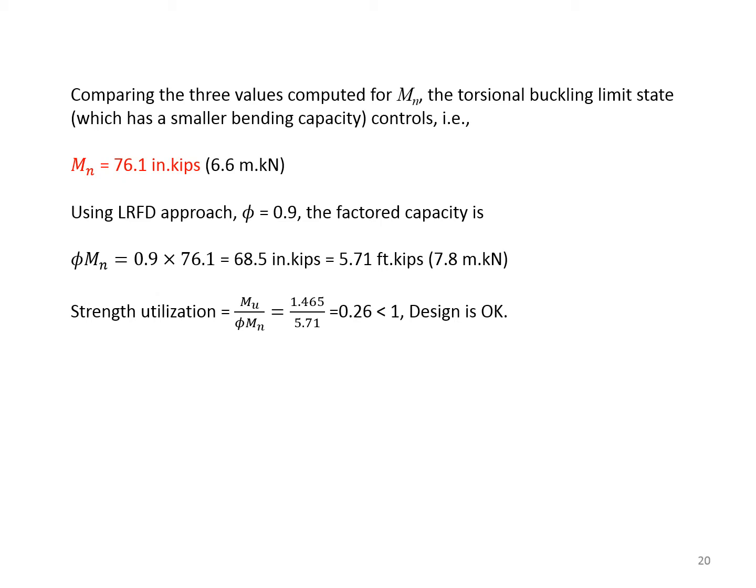As you observe, the second value, which is based on the torsional buckling, is the smallest. Therefore, our MN for this angle is 76.1 inch-kips. However, we need to apply a resistance reduction factor, or sometimes called capacity reduction factor. In this case, φ is 0.9, and we have a factored capacity φMN, which is 5.71 foot-kips. Now, we divide the applied bending moment by this resistance. We get what we call the strength utilization, which is 0.26. And as long as this value is less than 1, our design is okay for bending.